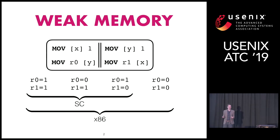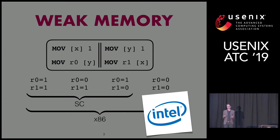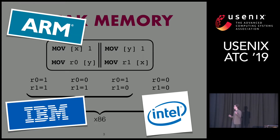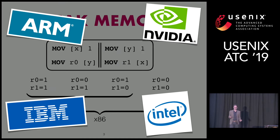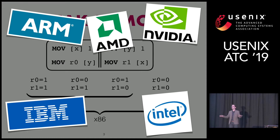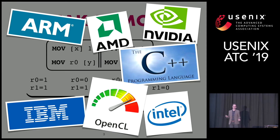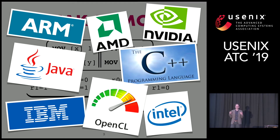This is very confusing to programmers targeting x86, but it's not just a problem with Intel processors. It happens on IBM Power processors, on ARM processors even more so, on GPUs made by NVIDIA and AMD. And because it happens on all of these low-level architectures, it also appears in the high-level languages we use — like C, C++, OpenCL, Java. They all have some notion of weak memory.